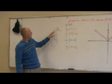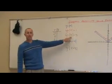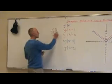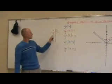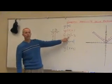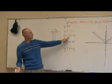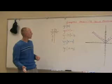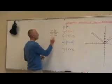The absolute value of negative 2 is going to be 2 minus 3 ends up being negative 1. The absolute value of negative 1 is 1 minus 3, and we're going to end up with negative 2.